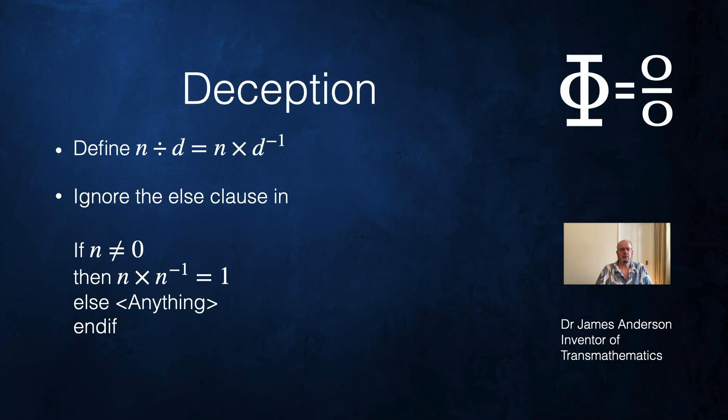So how does the deception go? We start off by defining that n divided by d equals n times d to the power minus one. And this is true. This is an axiom of real arithmetic. And then they say if n is not equal to zero, then n times n to the power minus one equals one. And this is true. This is an axiom of real arithmetic.